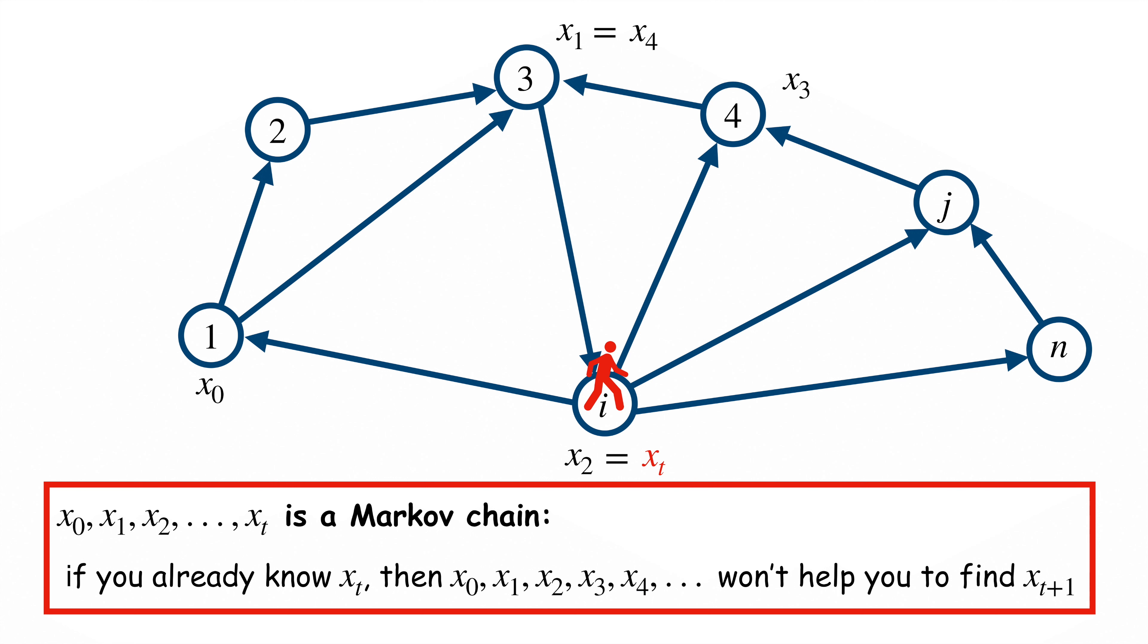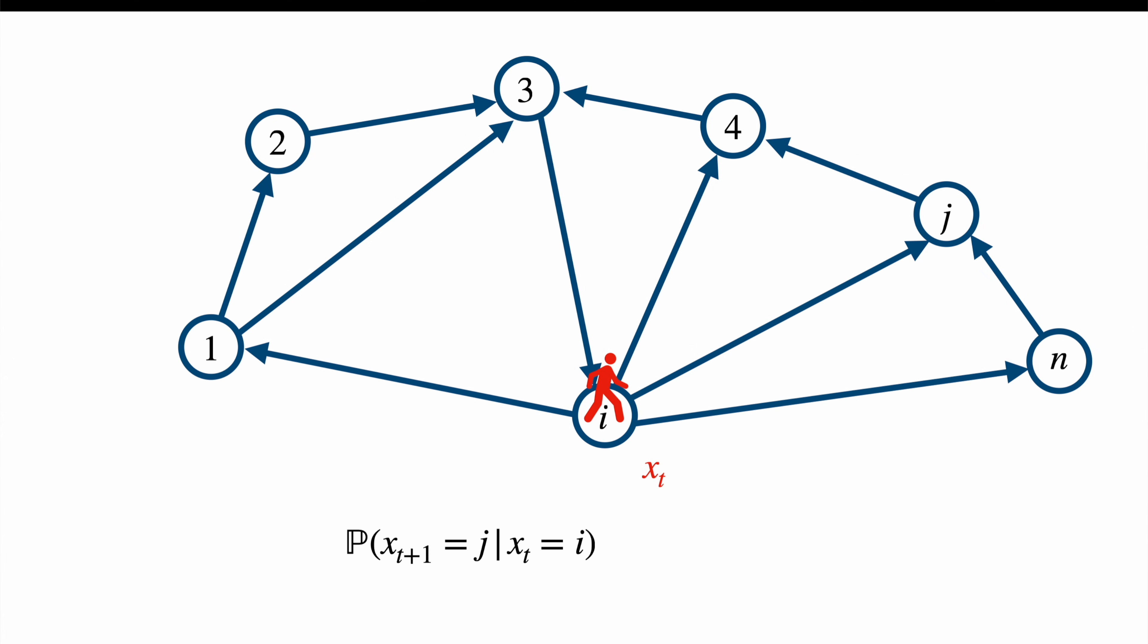The sequence x1, x2, xt of pages visited by the web surfer is called the Markov chain. If you want to find the next page location xt plus 1 of a surfer and you already know that the current location xt of the surfer is i, then knowing the previous locations x0, x1, xt minus 1 will not give you any additional help. The probability that its next visited page xt plus 1 is equal to j, given that its current page xt is equal to i, is equal to the probability that the surfer follows the link from i to j, if it exists, plus the probability to be directly teleported to page j.